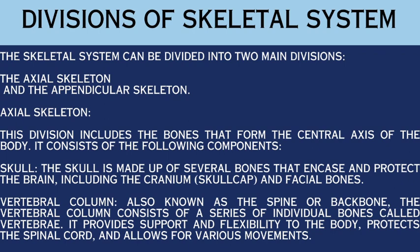Now the next topic is division of the skeletal system. The skeletal system can be divided into two main divisions: the axial skeleton and the appendicular skeleton. The first is the axial skeleton, which includes the bones that form the central axis of the body.